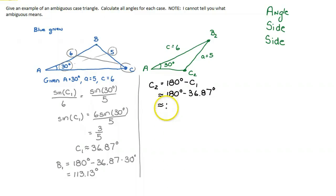Which gives me a value of 143.13, which makes sense now because this looks like an obtuse angle. Therefore, if I now know C₂, I can find B₂, which is going to be 180° minus 143.13° minus 30°, which is approximately 6.87 degrees.